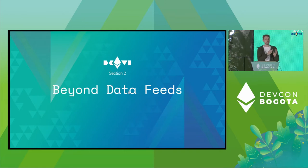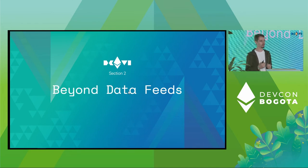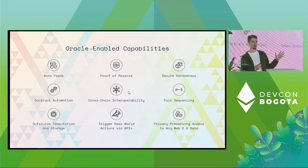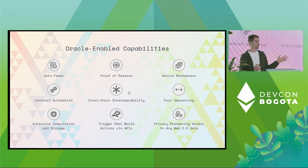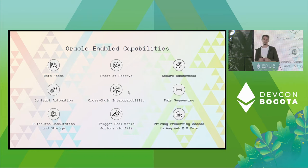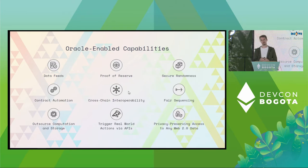Here are some of the capabilities enabled by oracles. Data feeds I just talked about. Proof of reserve — I can ensure that on-chain assets are sufficiently collateralized by some off-chain reserve of funds by having independent oracles monitor that reserve and report how large the collateral is. Secure randomness, contract automation, and cross-chain interoperability I'll talk about more later. Fair sequencing — I can use an oracle network to protect users from toxic MEV extraction by fairly sequencing transactions.